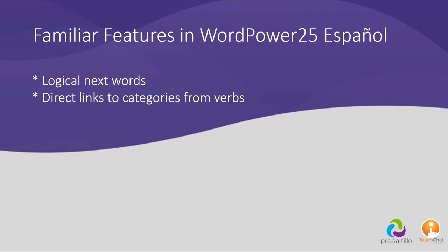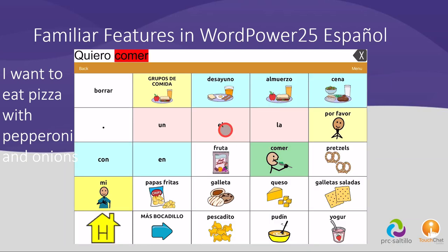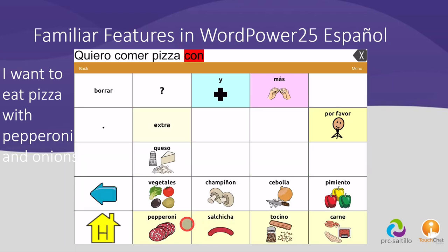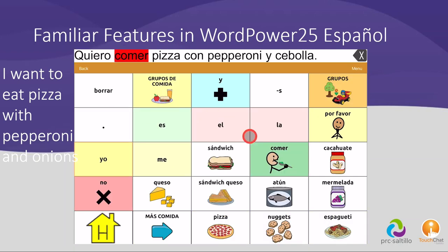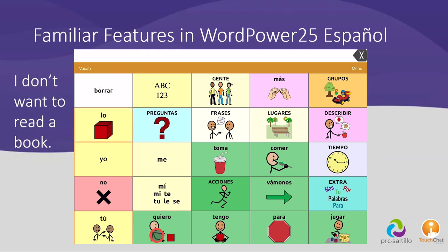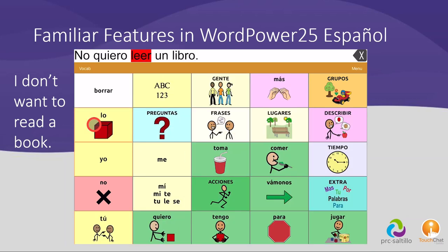Direct links to categories from related verbs. For example: quiero — comer — pizza — con — pepperoni — y — cebolla — quiero comer pizza con pepperoni y cebolla. No quiero leer un libro.